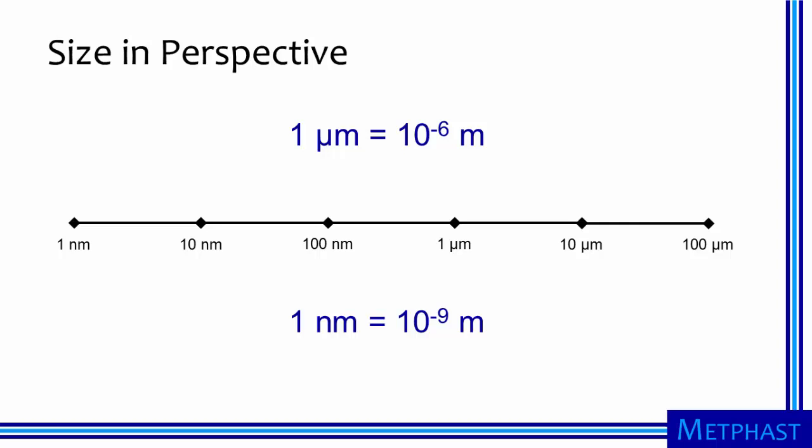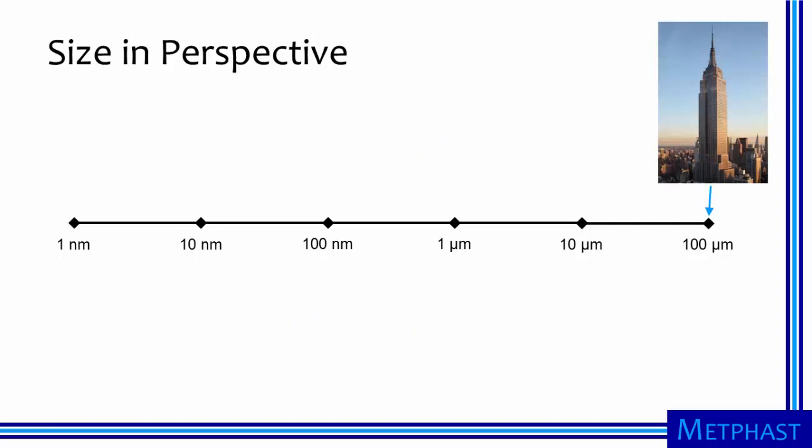To put these differences in perspective in one more way, let's imagine that the Empire State Building, which is 1,454 feet tall to its tip, is only 100 micrometers tall. Objects roughly 100 micrometers in size are about the largest objects that can remain airborne long enough to be inhaled into a person's respiratory system.